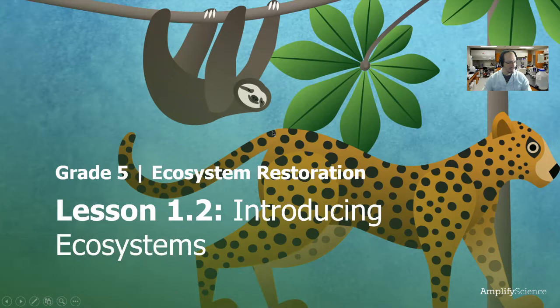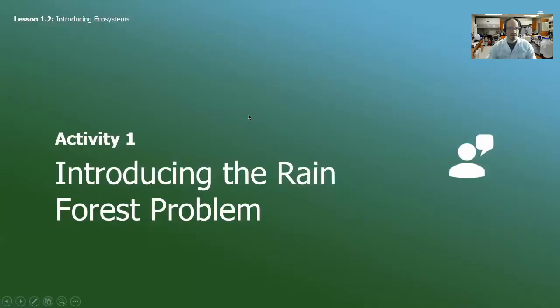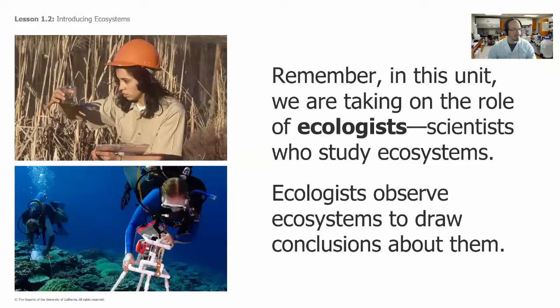Good morning, UP scientists. Today we're continuing to get into our new unit about ecosystem restoration, and today we're going to be starting an experiment that we're going to be observing basically for the rest of the year. First we're going to introduce our problem for this first chapter, and it's going to be called the Rainforest Problem.